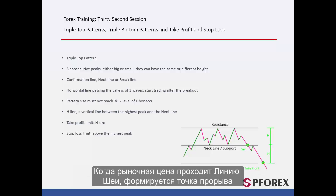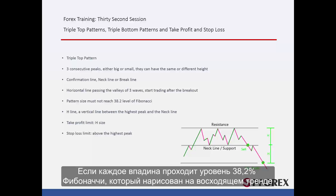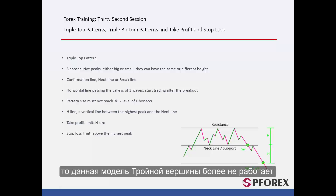When market price passes the neckline, a breakout point is formed. If each valley passes the 38.2% level of the Fibonacci pattern drawn on the uptrend, the given triple top pattern will not be valid anymore.